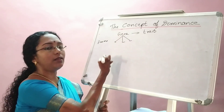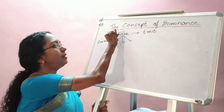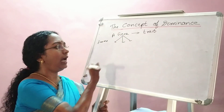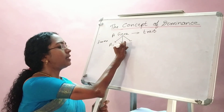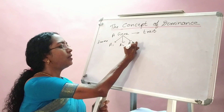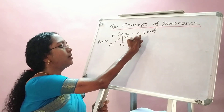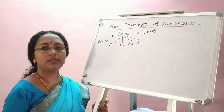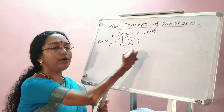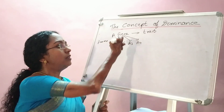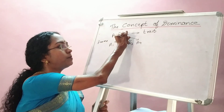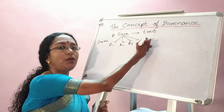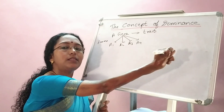For example, take gene A. It can have many forms: A1, A2, A3, A4, and so on. That means one gene can have many forms, and one gene is responsible for one trait. The trait can be of different types.